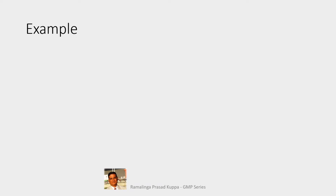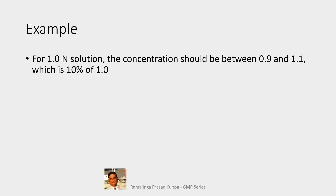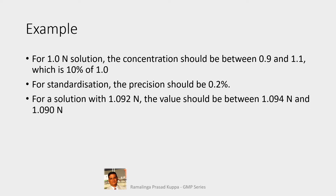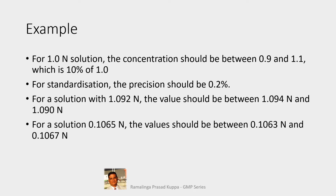This example explains more than words. For a 1 normal solution, the concentration should be between 0.9 and 1.1, which is 1.0 ± 10%. For standardization, the precision should be 0.2%. For a solution of 1.092 normal, the value should be between 1.090 and 1.094. For a solution of 0.1065 normal, the value should be between 0.1063 and 0.1067 — within 0.2%.